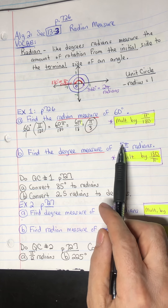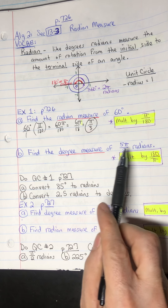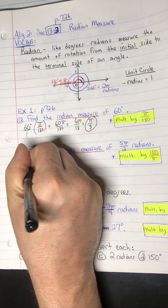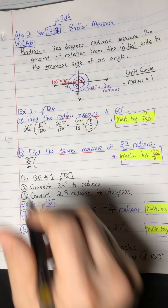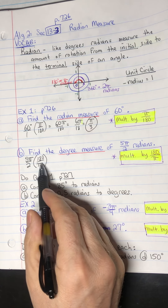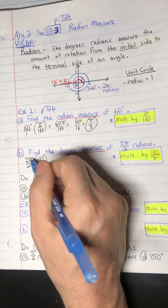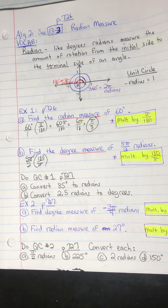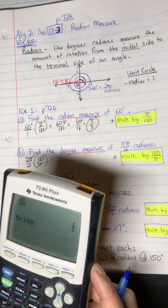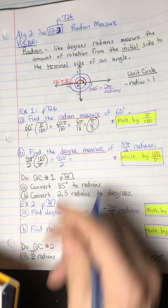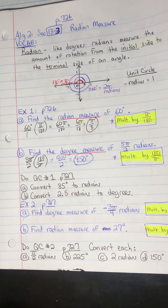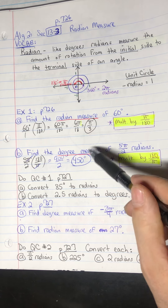Now let's do part B. We're going to start with 5 pi over 2 radians and convert it to degrees. If you're starting with radians and converting to degrees, multiply by 180 over pi. So: 5 pi over 2 times 180 over pi. The pi's cancel out, leaving 5 times 180 divided by 2. That's 900 divided by 2, which equals 450 degrees. So 5 pi over 2 radians is 450 degrees.